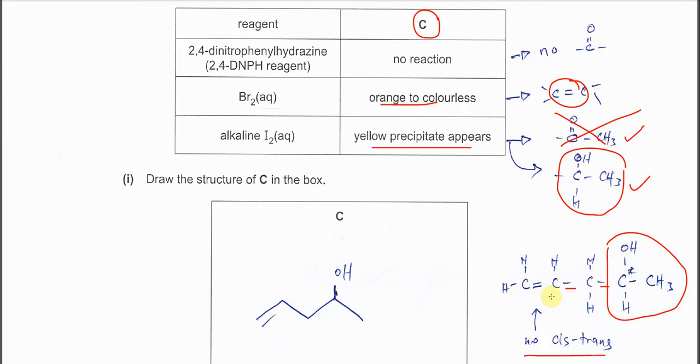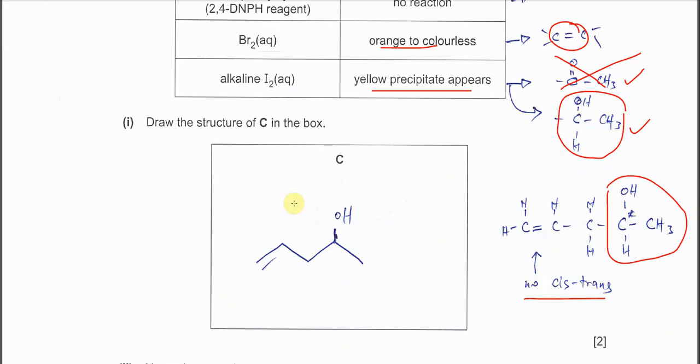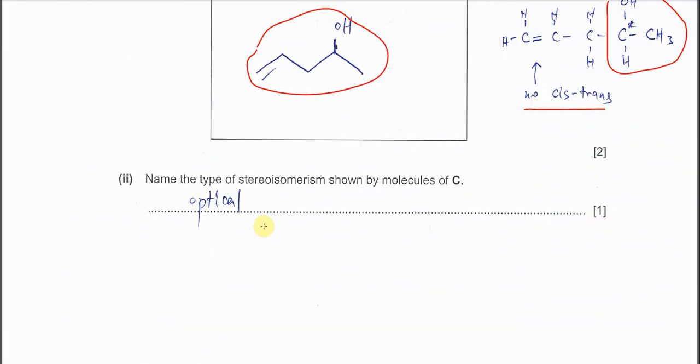So confirm this is the only structure. Once you know the structure like this, you can give this structure or you just draw the skeleton. Okay, because here never says that the structure must be skeleton. So you can draw this structure or this structure. Same. Okay, name the type of stereoisomerism shown by C. Okay, just now I told you already, it's optical.